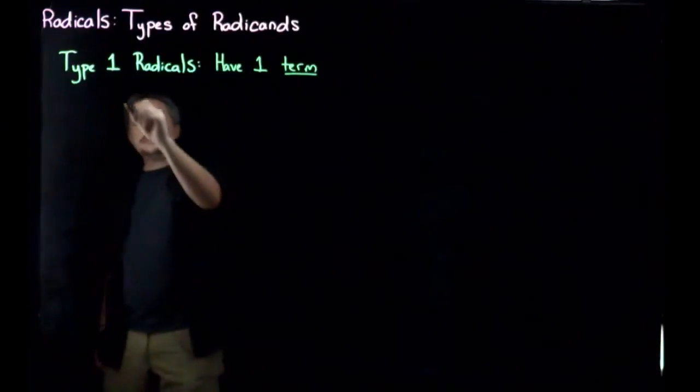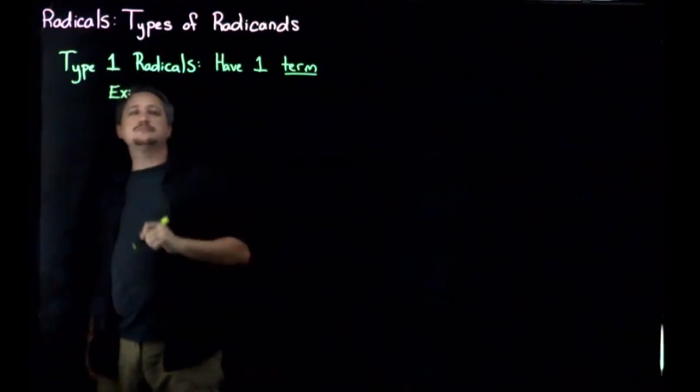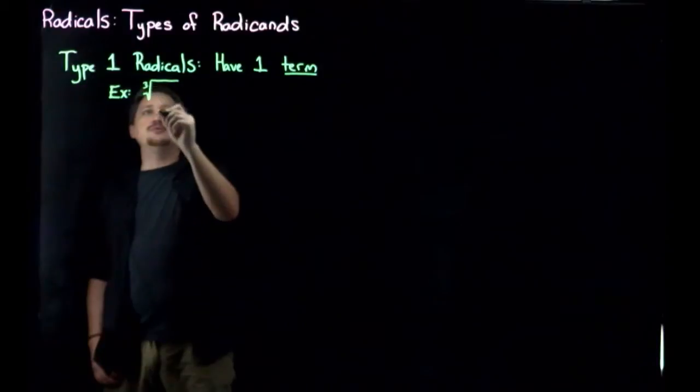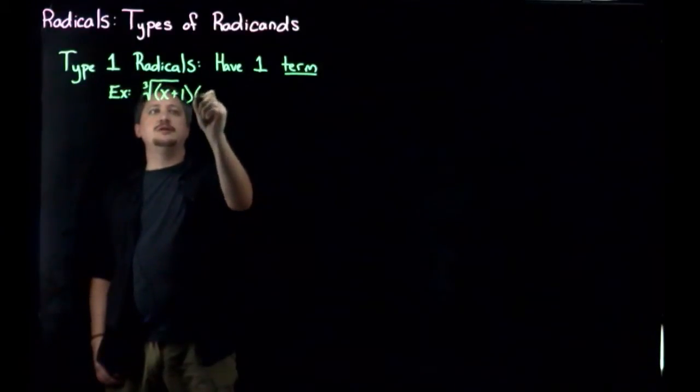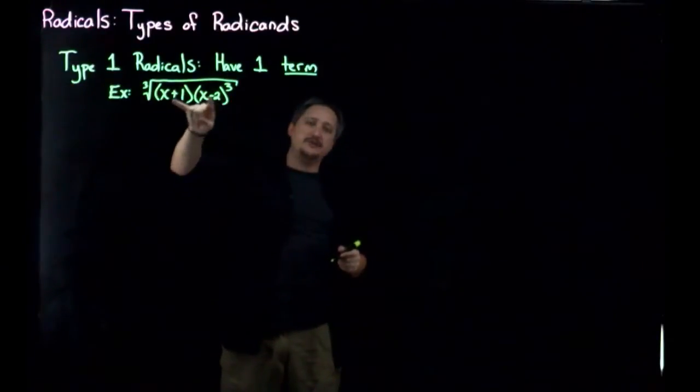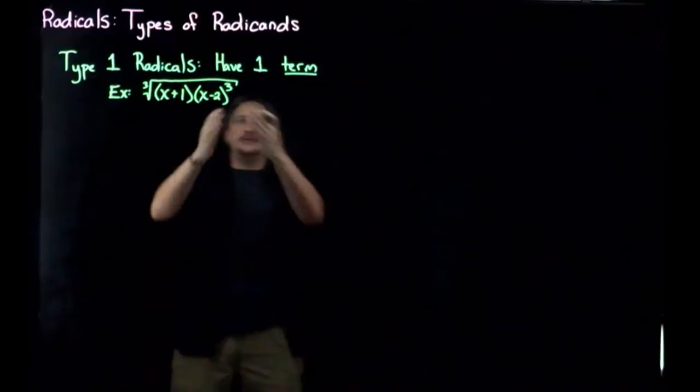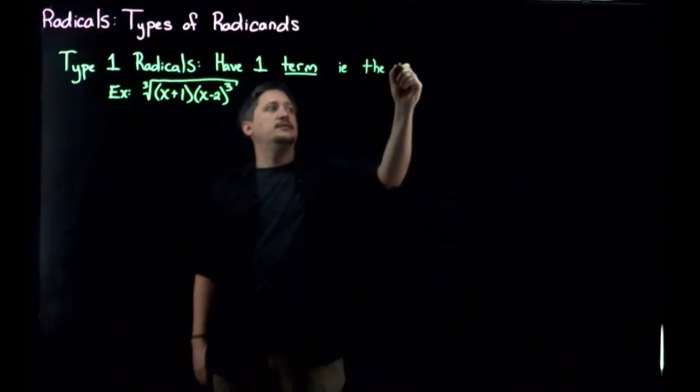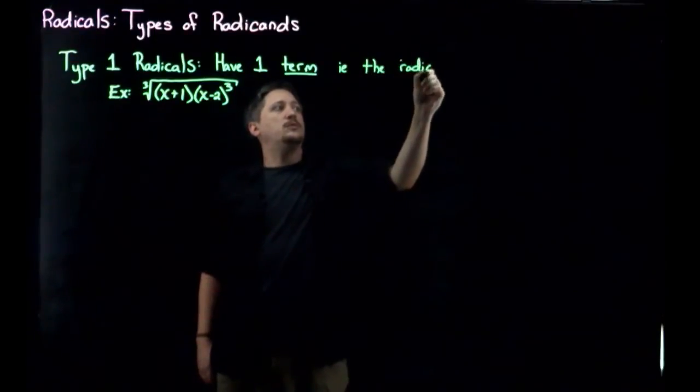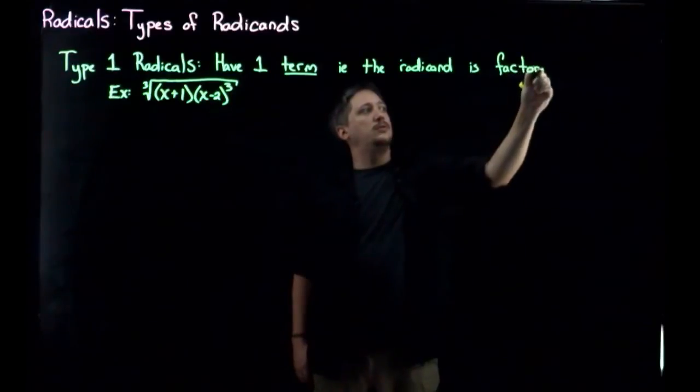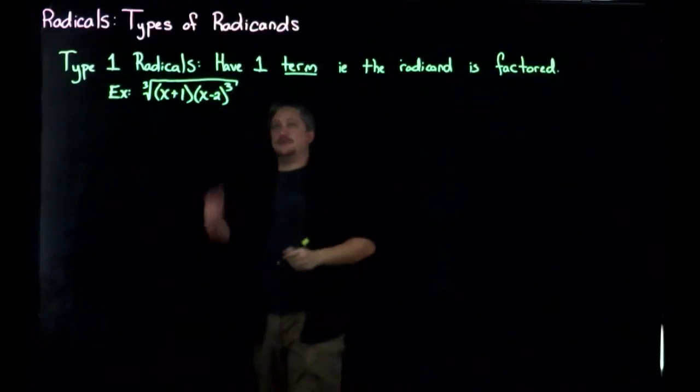So for example you could have a radical that looks like, maybe it's the third root and we could have something like x plus 1, x minus 2 cubed or something like this. This would be a type 1 because the radical bit inside is already factored.